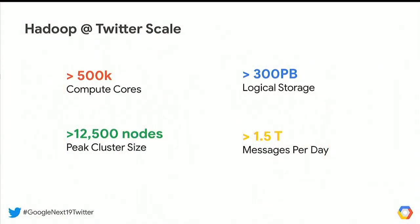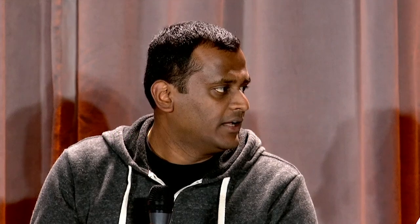Is that one single Hadoop cluster — one name node serving 12,500 nodes? It's actually multiple name nodes. We could have anywhere between 6 to 8 name nodes. Traditionally the architecture of HDFS was that a single name node could not scale, so the Hadoop community and we invested a lot of time in federation — HDFS federation and client-side mount tables — to make it more scalable to 12,500 hosts.